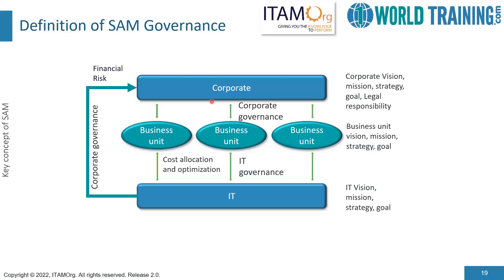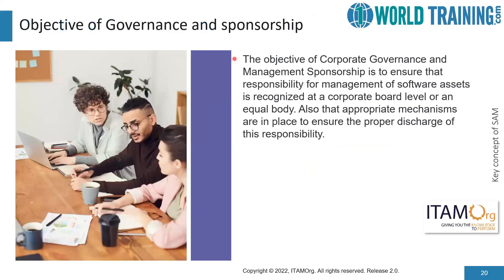The success of a software asset management strategy is dependent on its alignment to the overall governance structure, which provides guidance to build up structures and processes according to how they want the organization to work. Governance of software asset management is applicable to a constantly managed approach at all levels of the organization. It begins with setting a clear software management strategy, followed with policies to deliver the strategy to an agreed scope. The objective of governance and sponsorship ensures that responsibility for management of software assets is recognized at a corporate board level or equal body, and that appropriate mechanisms are in place to ensure the proper discharge of this responsibility.